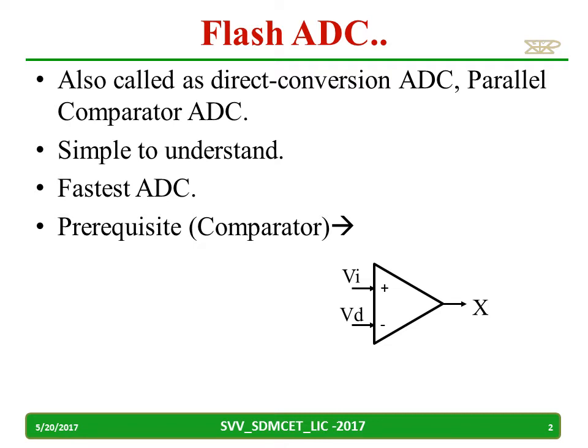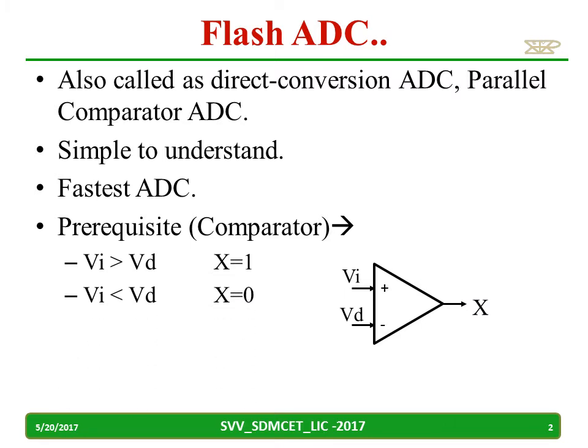To understand the working of Flash ADC, the prerequisite is you should know the working of the comparator. Consider this comparator with two inputs VI and VD. When VI is greater than VD, the output will become high, and when VI is less than VD, the output becomes low.